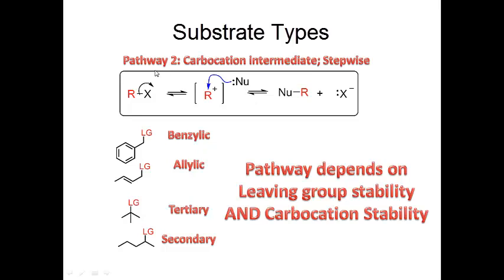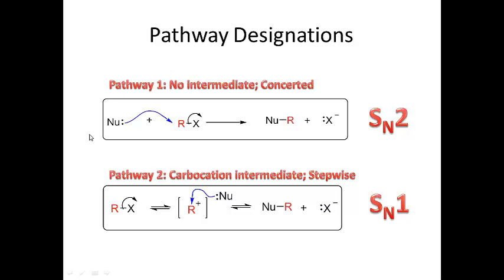The SN1 pathway involves the leaving group leaving first to give a carbocation intermediate, then the nucleophile comes in and attacks. The types of substrates that work with this pathway are benzylic, allylic, tertiary, and secondary. Whether a substrate goes through this pathway depends on how stable the leaving group is and how stable the carbocation is after the leaving group leaves — both of those affect the rate of this reaction.